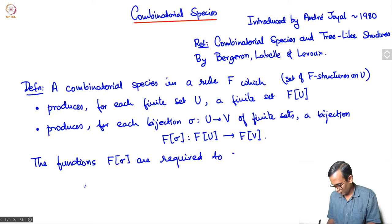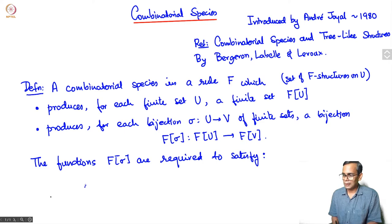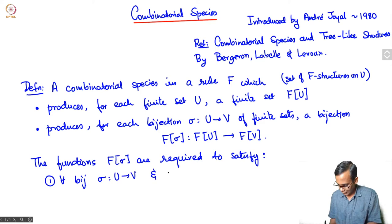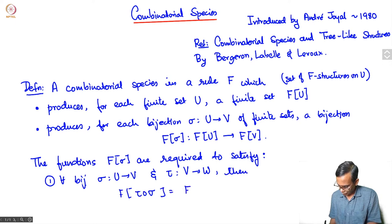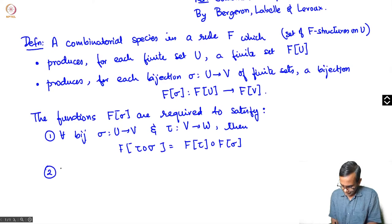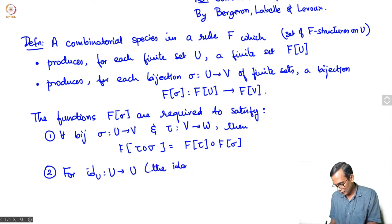The first axiom is the composition axiom. If you have a bijection sigma from U to V and another bijection tau from V to W, then F(tau ∘ sigma) = F(tau) ∘ F(sigma). The second axiom is that for the identity bijection from U to U, F(id_U) is just the identity map of F(U).